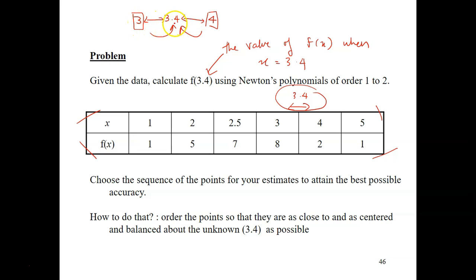Between 3 and 3.4, the difference is only 0.4. And between 3.4 and 4, the difference is 0.6. So which one of these two is much closer to 3.4? Of course, the answer is data number 3.